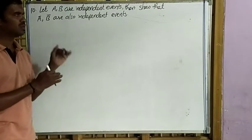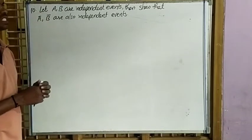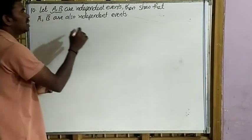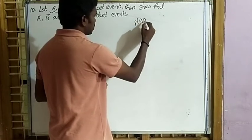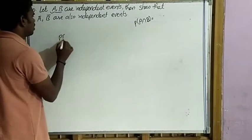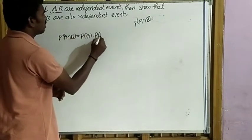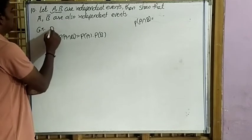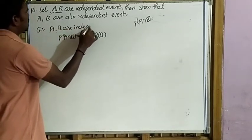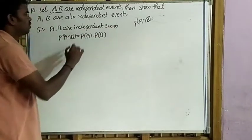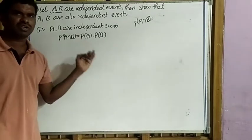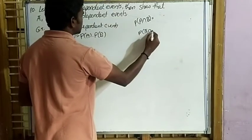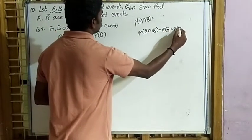Next, 10th question: If A and B are independent events, then show that Ā and B̄ are also independent events. Independent events means P(A∩B) = P(A) × P(B). Given that A and B are independent, so P(A∩B) = P(A) × P(B). We have to show P(Ā∩B̄) = P(Ā) × P(B̄).